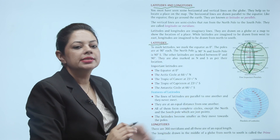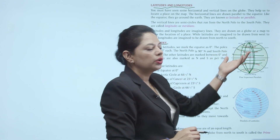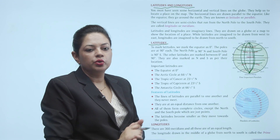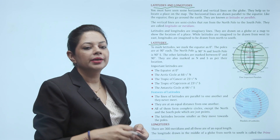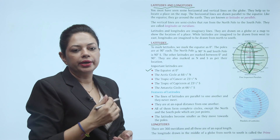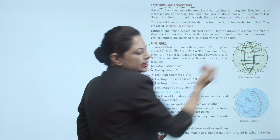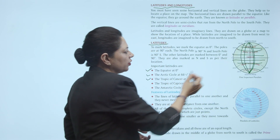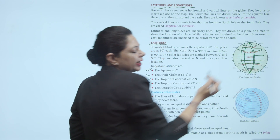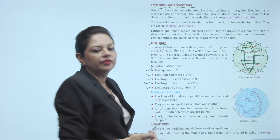Is tarike se hum latitudes ko mark karte hain — 90 north aur 90 south, total 180 latitudes hain. Inme se kuch 5 important latitudes hain jo location locate karne mein helpful hain: 0 degree — equator; 23 and a half degree north — Tropic of Cancer; 23 and a half degree south — Tropic of Capricorn; 66 and a half degree north — Arctic Circle; and 66 and a half degree south — Antarctic Circle.